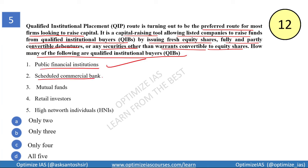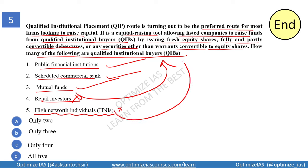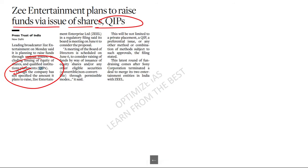The question asks which of the following are qualified institutional buyers: public financial institutions — yes; scheduled commercial banks — yes; mutual funds — yes; retail investors — no. Retail investors are not qualified institutional buyers, and neither are high net worth individuals. So the answer is three — option B.